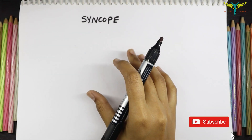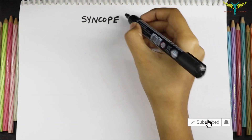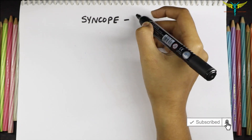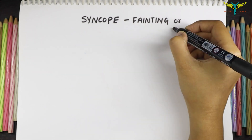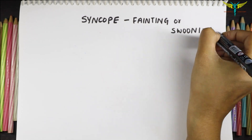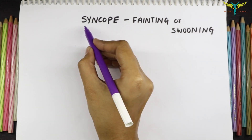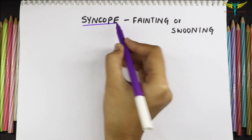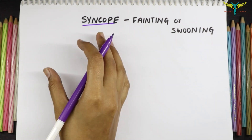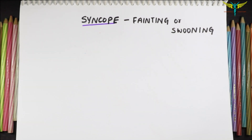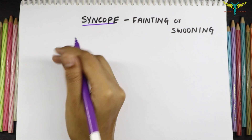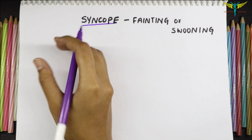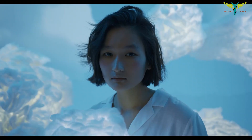Syncope, also called fainting or swooning, is a sudden and transient loss of consciousness that may be due to a sudden decrease in blood supply to the brain.